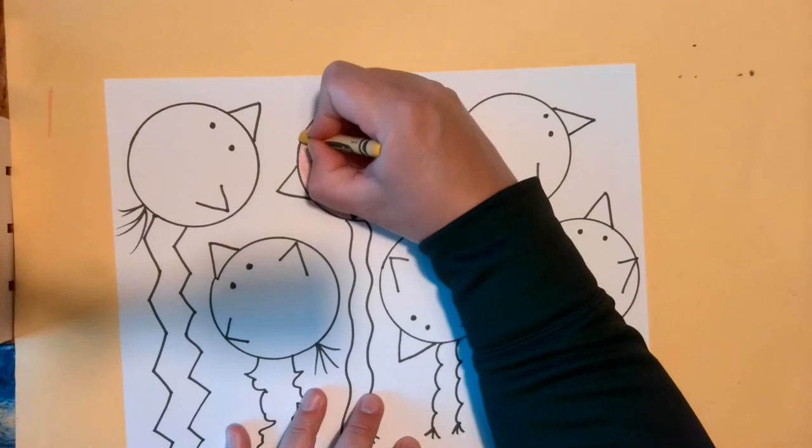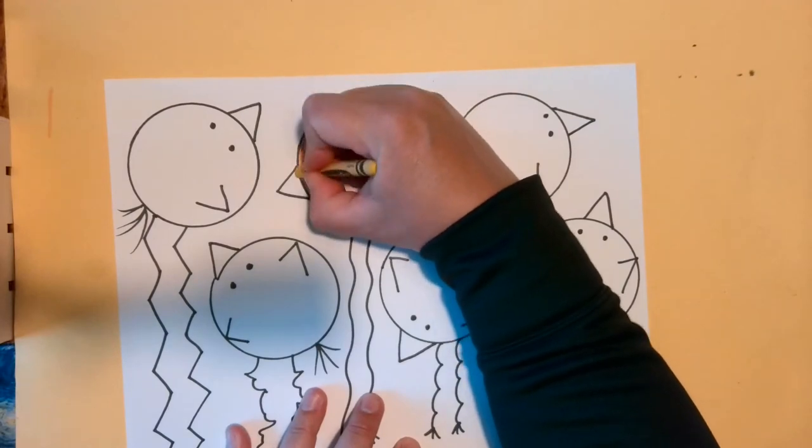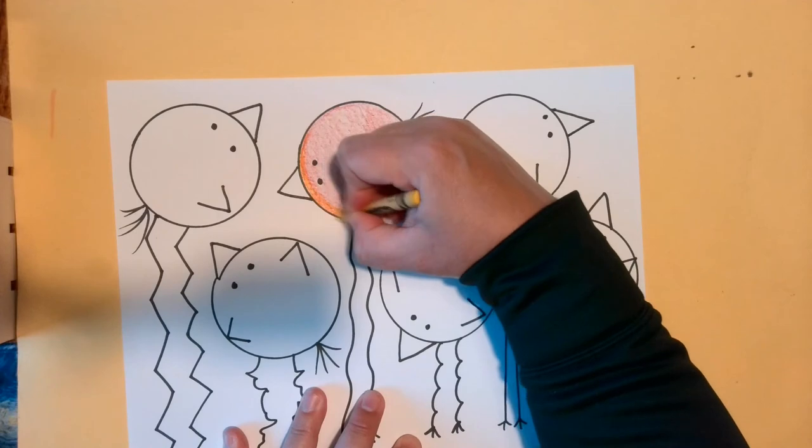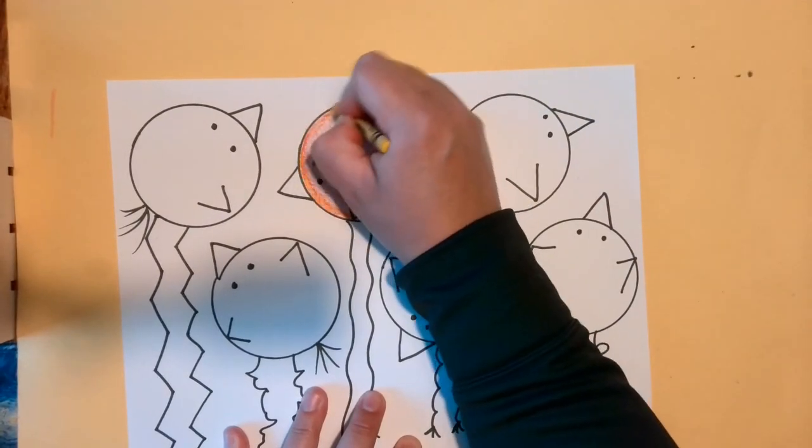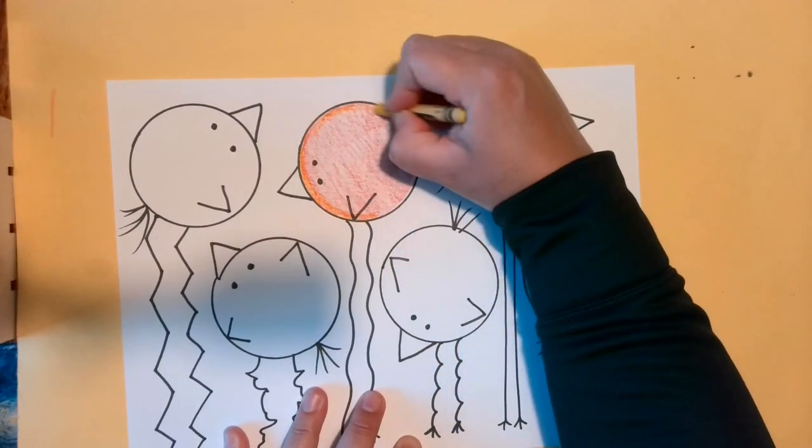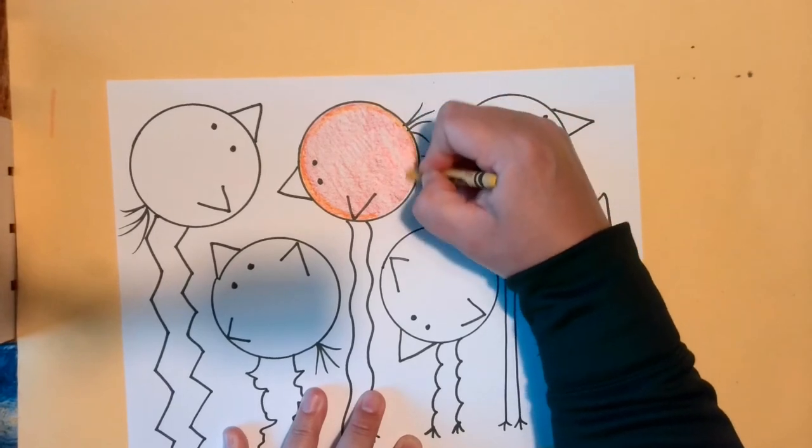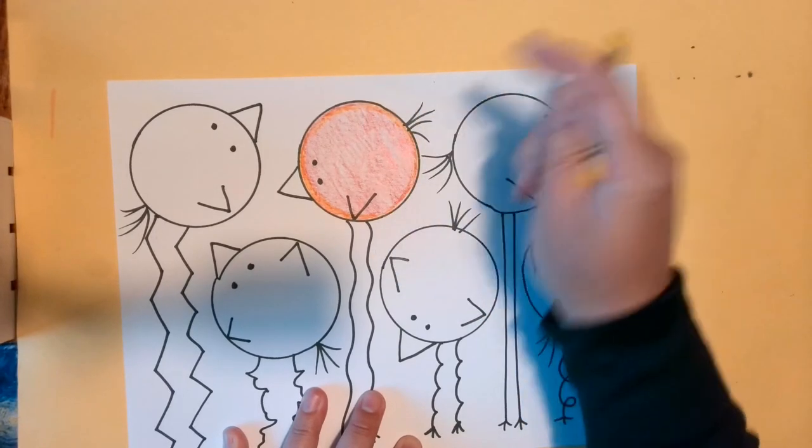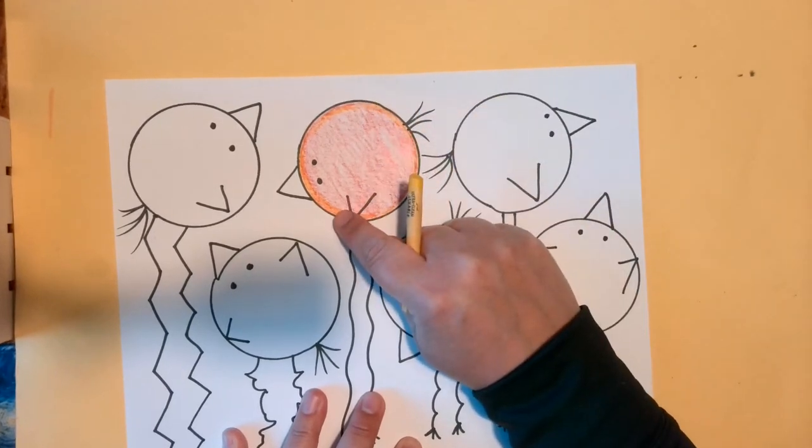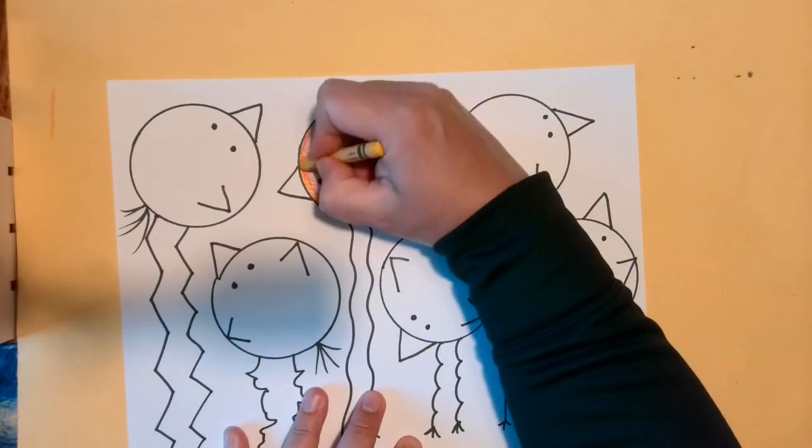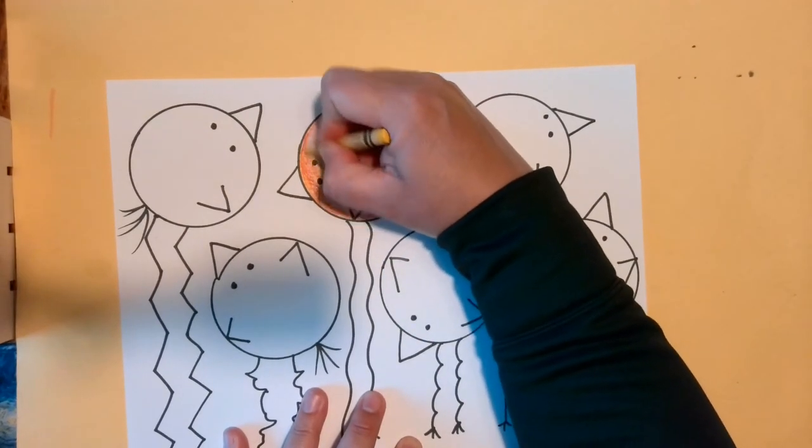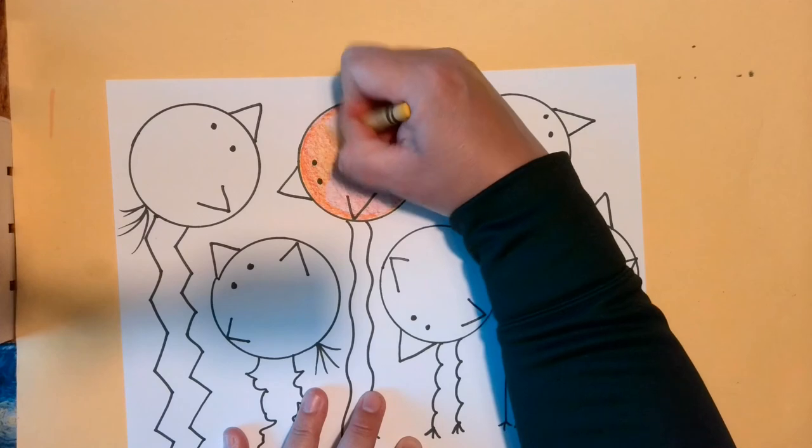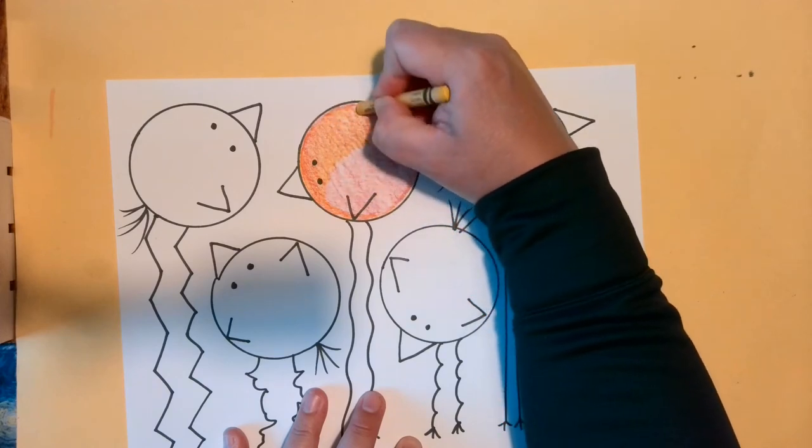Then I'm going to take my yellow. I'm going to do the same thing. I'm going to go along my edge. Can you see the difference between the edge and the inside? Hopefully it's starting to look more orange, more orange than just the red.